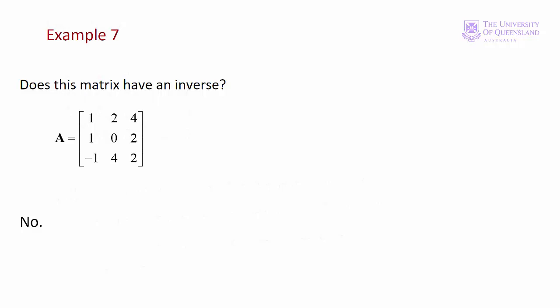We can't tell by direct observation, but row 3 equals 2 times row 1 minus 3 times row 2. That means using elementary row operations we can get three zeros in row 3, which confirms why the determinant is zero.